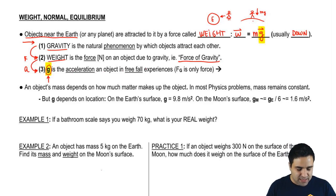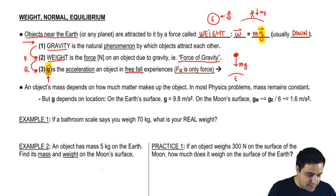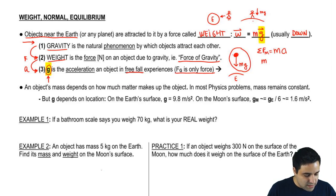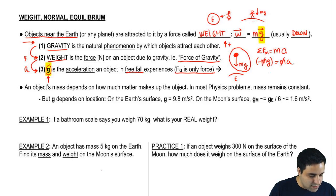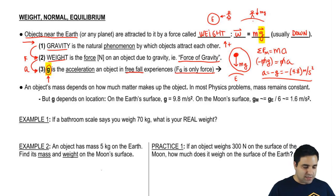Little g is the acceleration of an object that is in free fall. Free fall means that the only force acting on the object is the force of gravity. In a free body diagram, the only force is mg pulling it down. Writing the sum of all forces equals mass times acceleration, and the only force is mg going down — taking up as positive — gives negative mg equals ma. Mass cancels, and the acceleration is negative g, which is negative 9.8 meters per second squared on Earth.